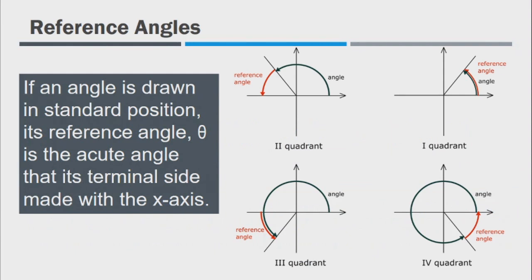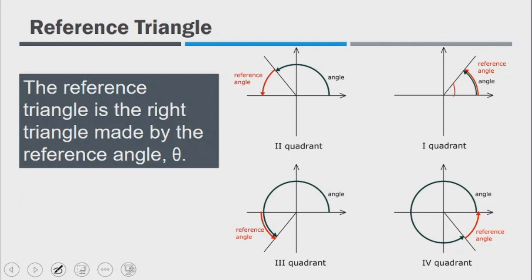A reference angle is defined as the angle that the terminal side of an angle makes with the x-axis, when the angle is drawn in standard position. For each quadrant, the reference angle is shown. The reference triangle is the right triangle that the reference angle makes with the x-axis — if you draw a straight line down, you form a right triangle that you can use to evaluate the trig functions.